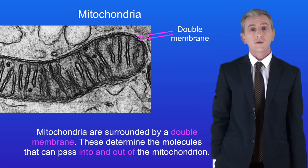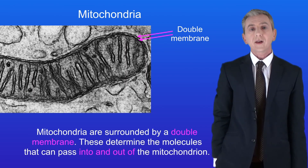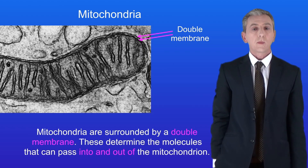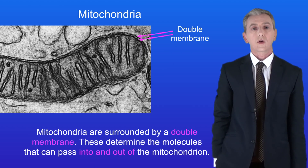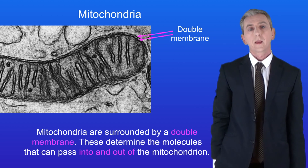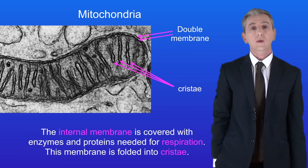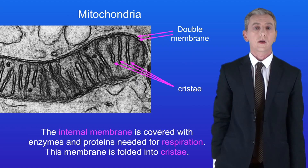Mitochondria are surrounded by a double membrane, and that's important for several reasons. Firstly, the membranes determine the molecules that can pass in and out of the mitochondrion. Secondly, the internal membrane is covered with enzymes and proteins needed for respiration.